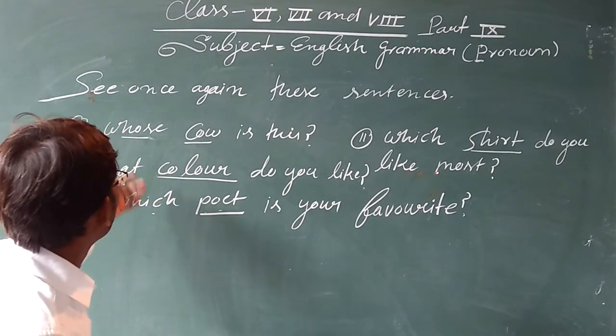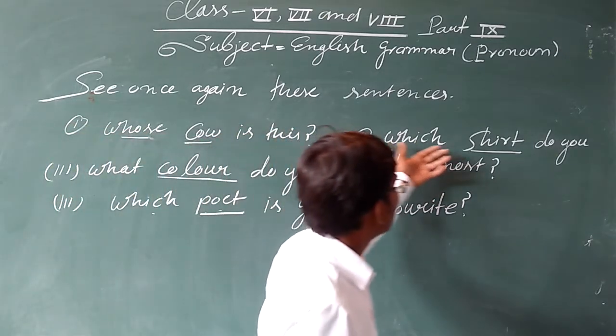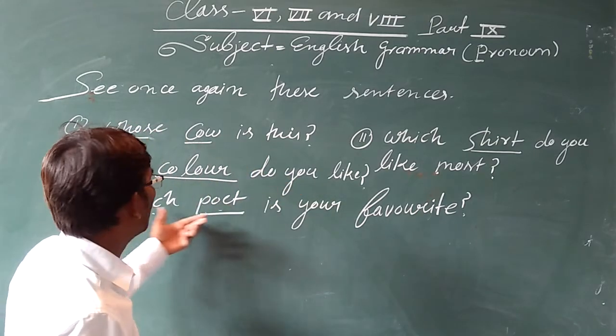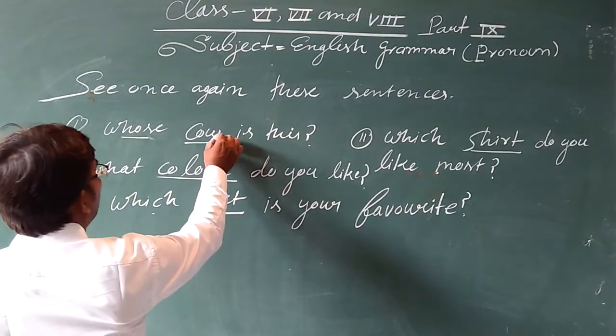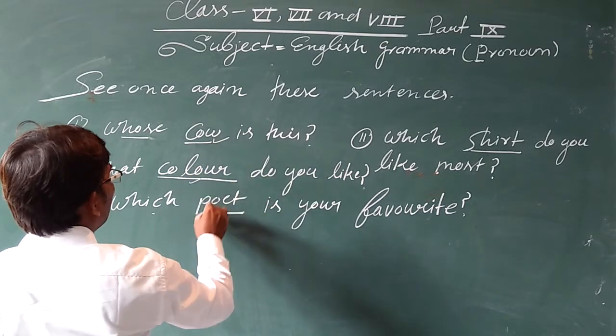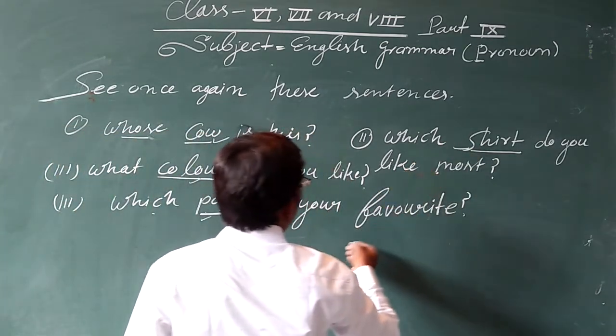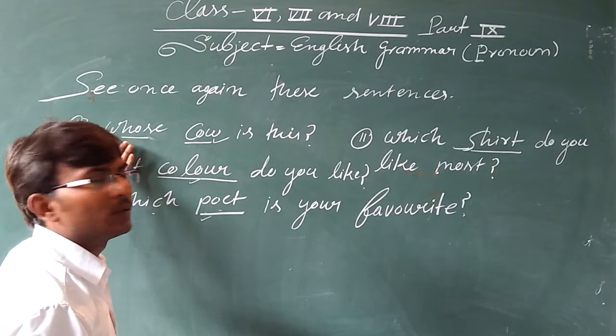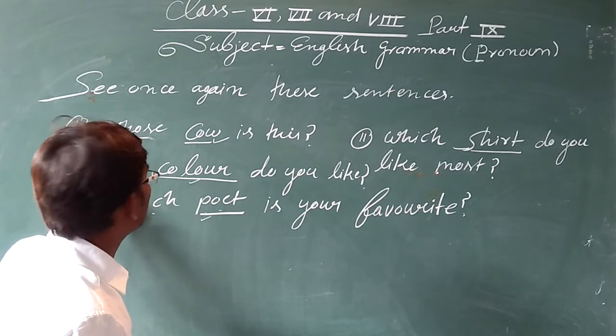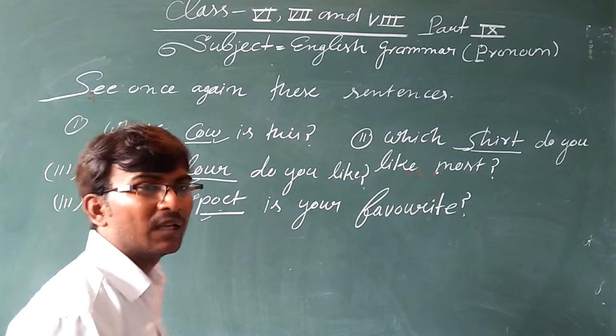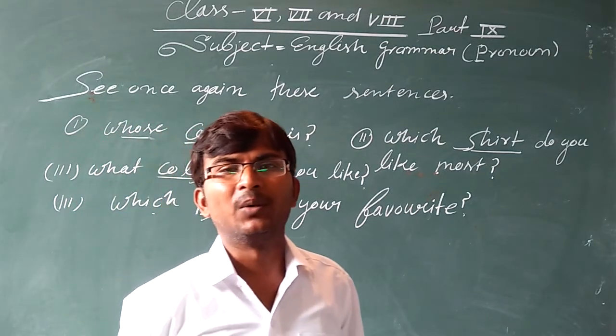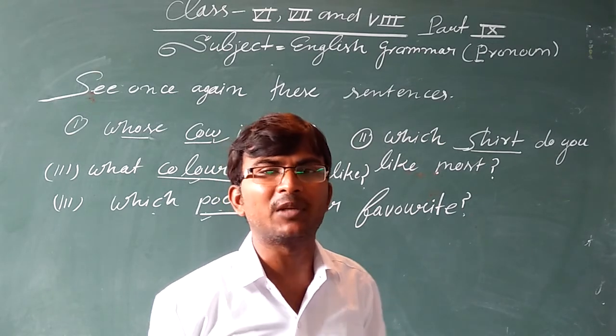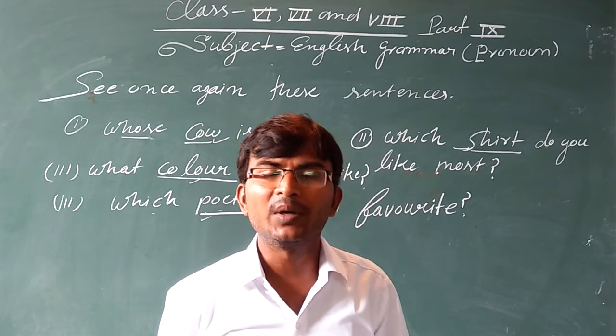Once again see. Whose car is this? Which color do you like most? Which poet is your favorite? So it's not a particular thing. Car here, color here, poet here. It's a noun. Who are you? So what is it? Interrogative adjective. First what is it? If you have a noun, then what is it? Interrogative adjective.